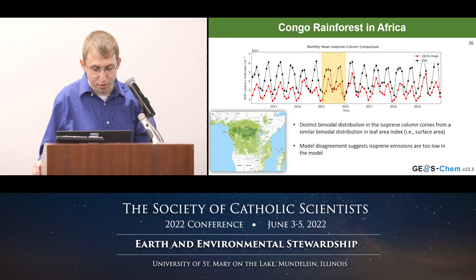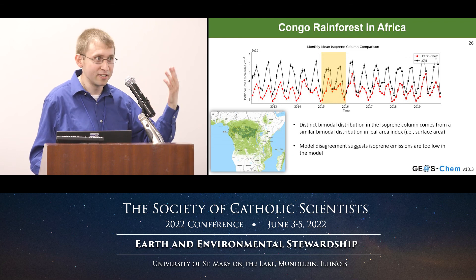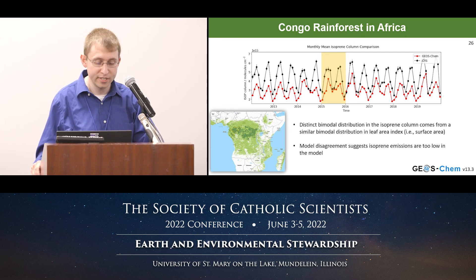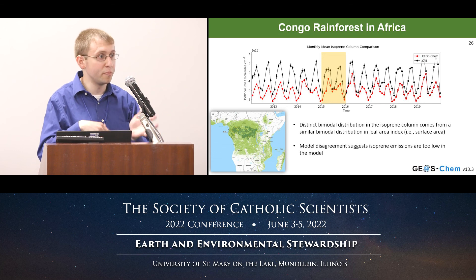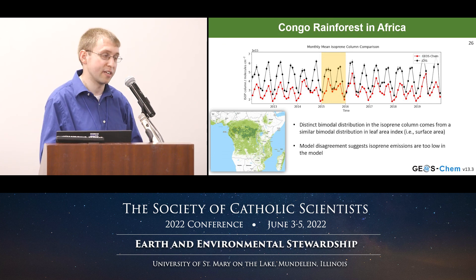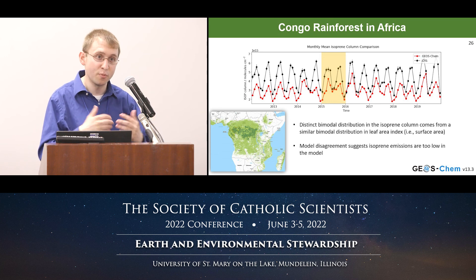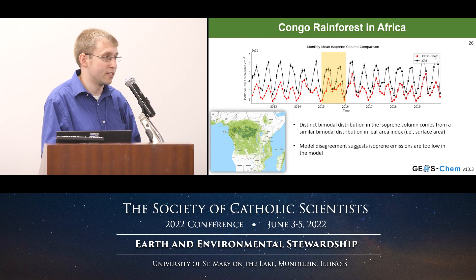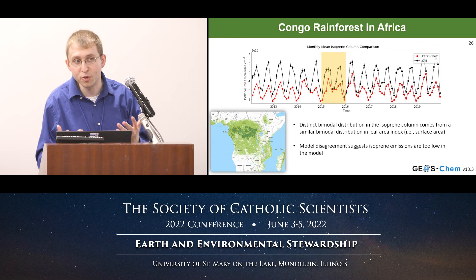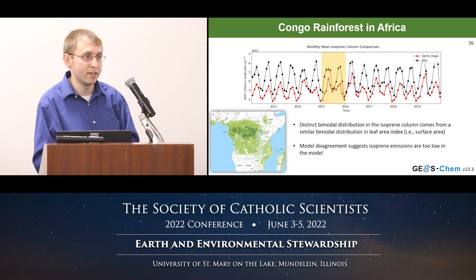The Congo rainforest in Africa shows two isoprene peaks per year — corresponding to the two-peaked leaf area cycle observed in that ecosystem, quite different from North America's single summer peak. In terms of model-measurement comparison for the Congo, the model underpredicts what we're actually observing, suggesting the model is currently missing some isoprene emission source. This tool allows us to see where the model performs well and improve accordingly.